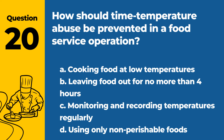Question 20. How should time-temperature abuse be prevented in a food service operation? a. Cooking food at low temperatures. b. Leaving food out for no more than four hours. c. Monitoring and recording temperatures regularly. d. Using only non-perishable foods. Answer: c. Monitoring and recording temperatures regularly. Regular monitoring and recording of temperatures is key to preventing time-temperature abuse.